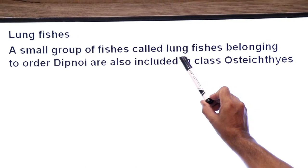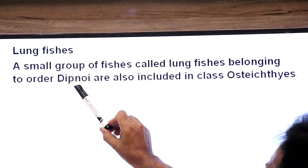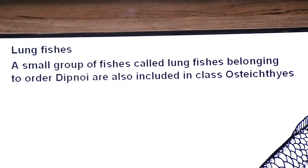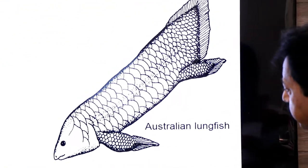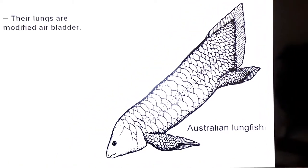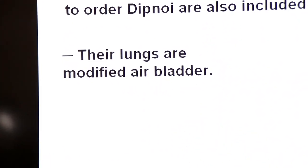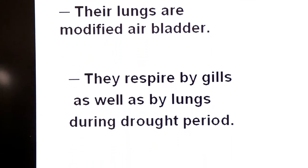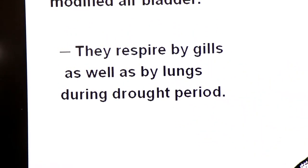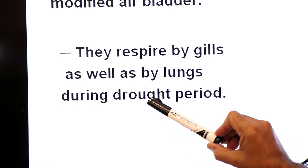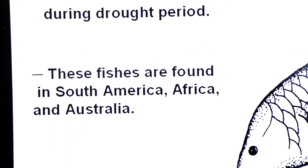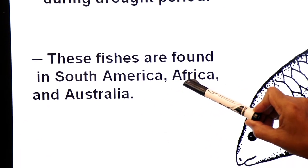So in the last, we will discuss lungfishes. A small group of fishes called lungfishes belonging to order Dipnoi are also included in class Osteichthyes. Dear students, these are bony fishes. Look at this fish, Australian lungfish. Usually, fishes have respiratory organs as gills. But lungfishes have lungs developed from modified air bladder. Their lungs are modified air bladder. So they respire usually by the gills, as well as by their lungs during drought period. Drought is a condition when there is deficiency of water.